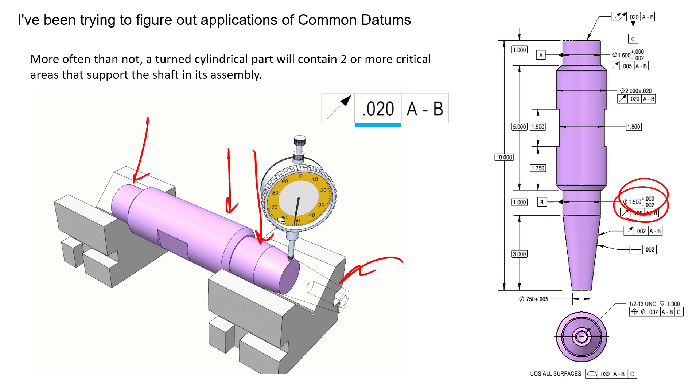So this is a very common way of using common datums or dual datums or multiple features to create a single datum. In this case, we took two datum features—datum feature A, datum feature B—identified them in the feature control frame with a dash between them, and we've established a new datum: datum axis A-B.